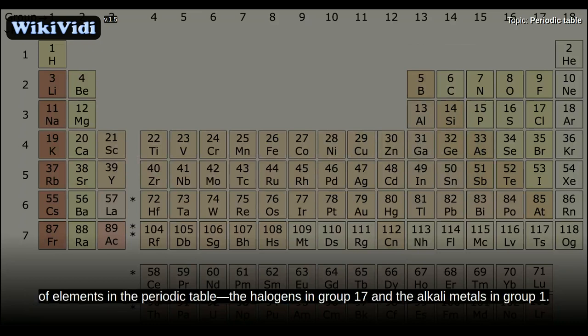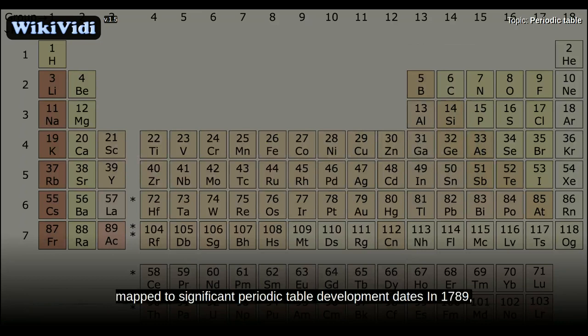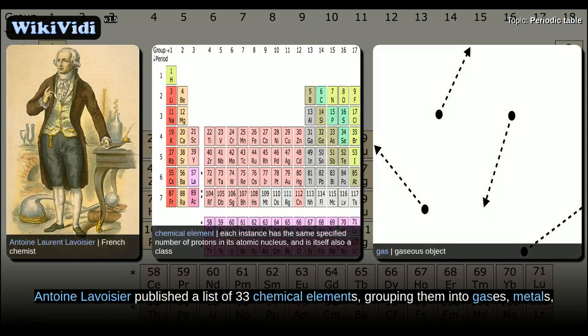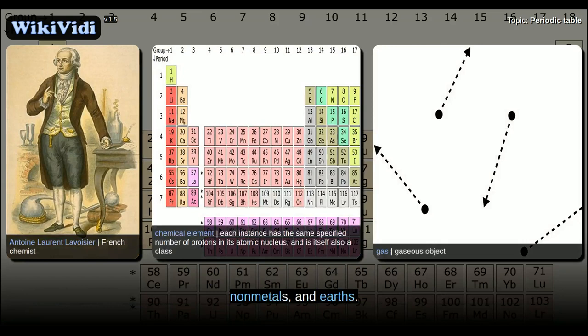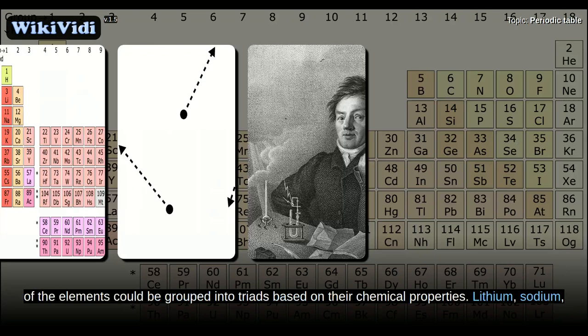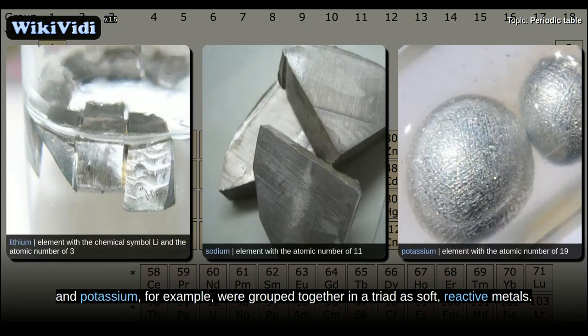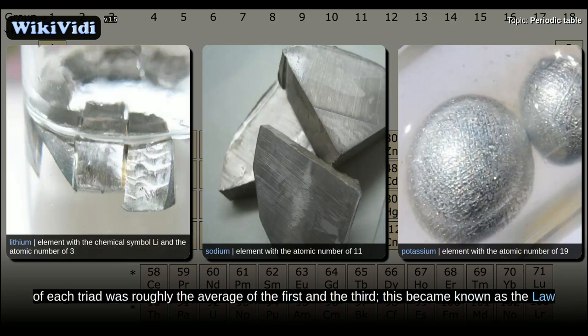In 1789, Antoine Lavoisier published a list of 33 chemical elements, grouping them into gases, metals, non-metals, and earths. Chemists spent the following century searching for a more precise classification scheme. In 1829, Johann Wolfgang Döbereiner observed that many elements could be grouped into triads based on their chemical properties — lithium, sodium, and potassium, for example, were grouped as soft, reactive metals. Döbereiner also observed that when arranged by atomic weight, the second member of each triad was roughly the average of the first and the third, which became known as the law of triads.